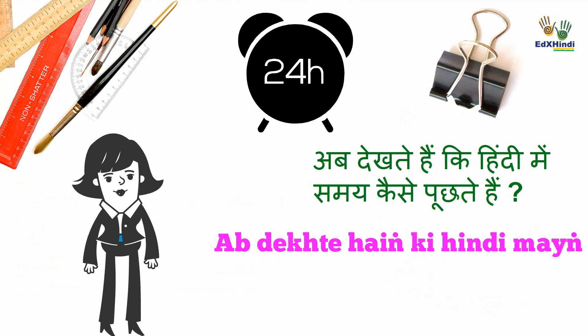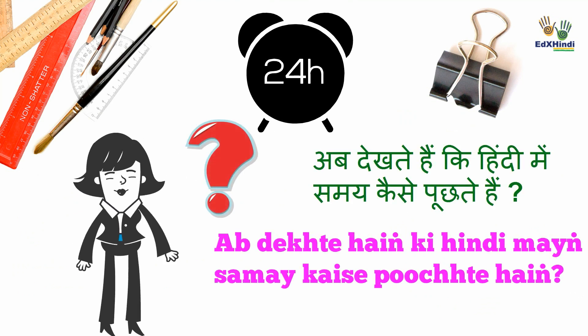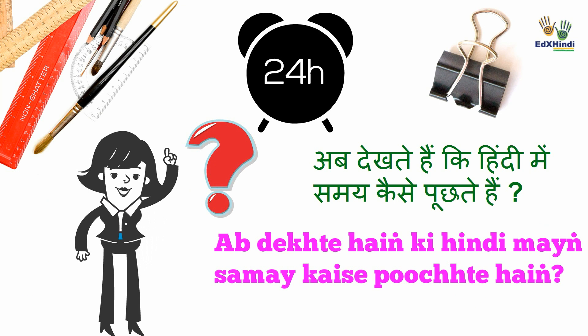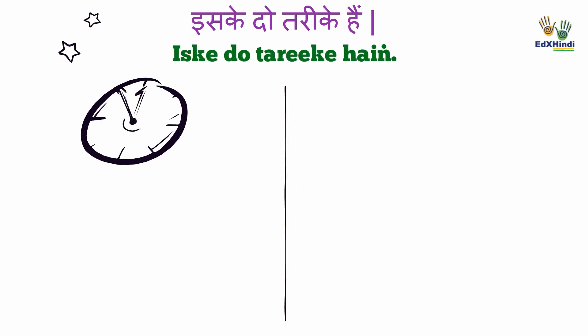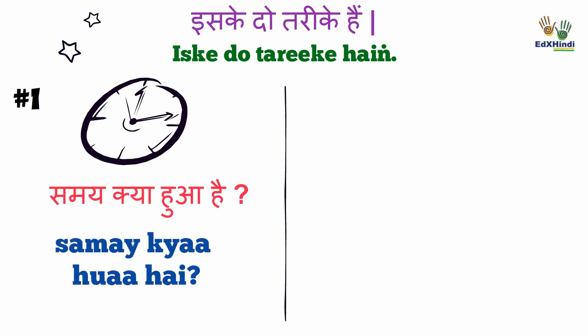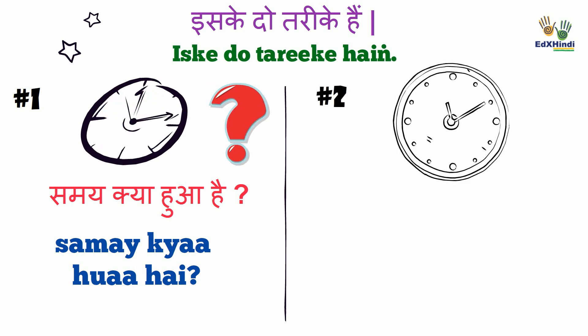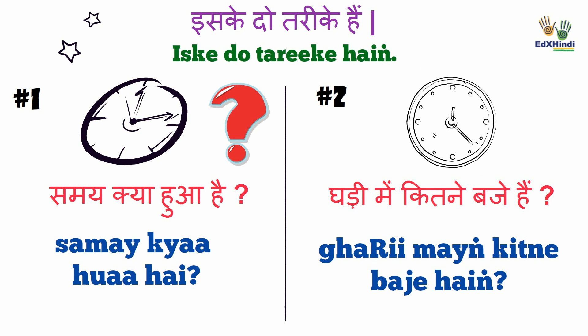Ab dekhte hai ki Hindi mein samay kaise poochte hai. Now let's see how to ask time in Hindi. Iske do tariqe hai. There are two ways of doing it. Pahla: samay kya hua hai — which means, what time is it? Ghari mein kitne baje hai? — What is the time on your watch?